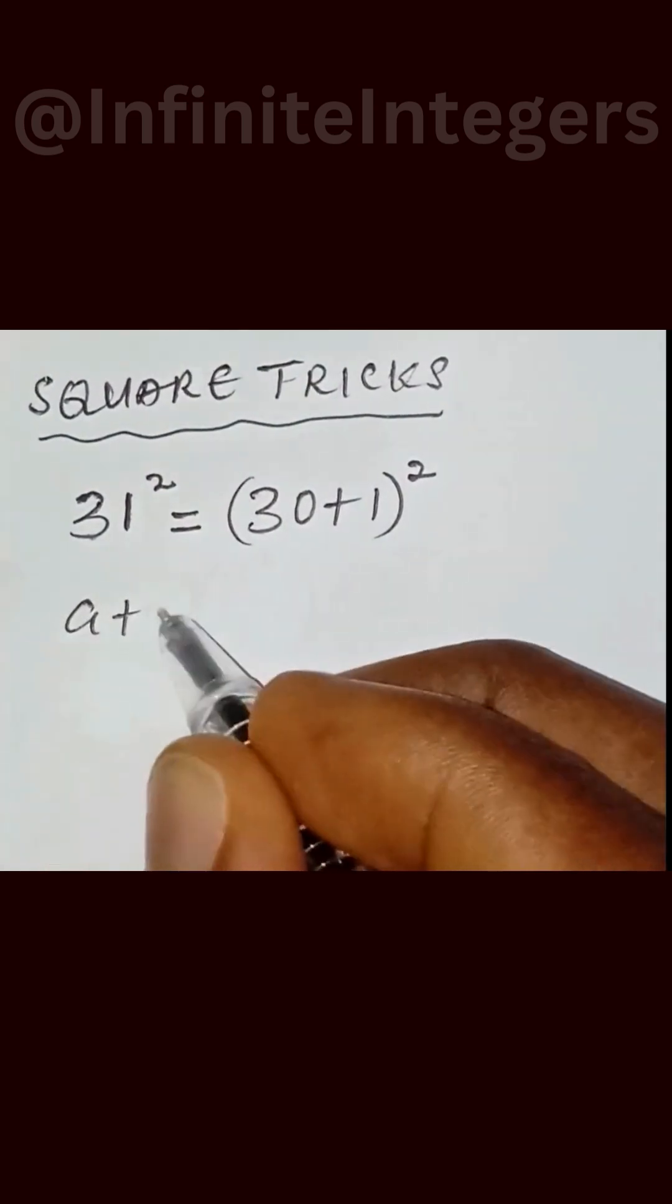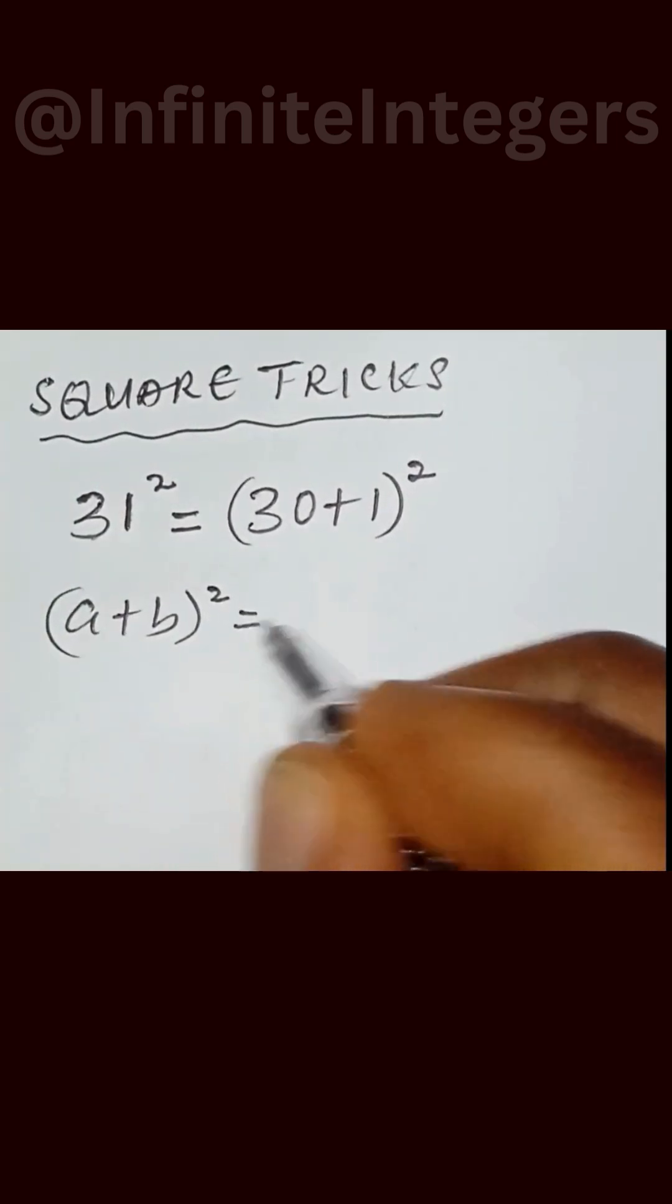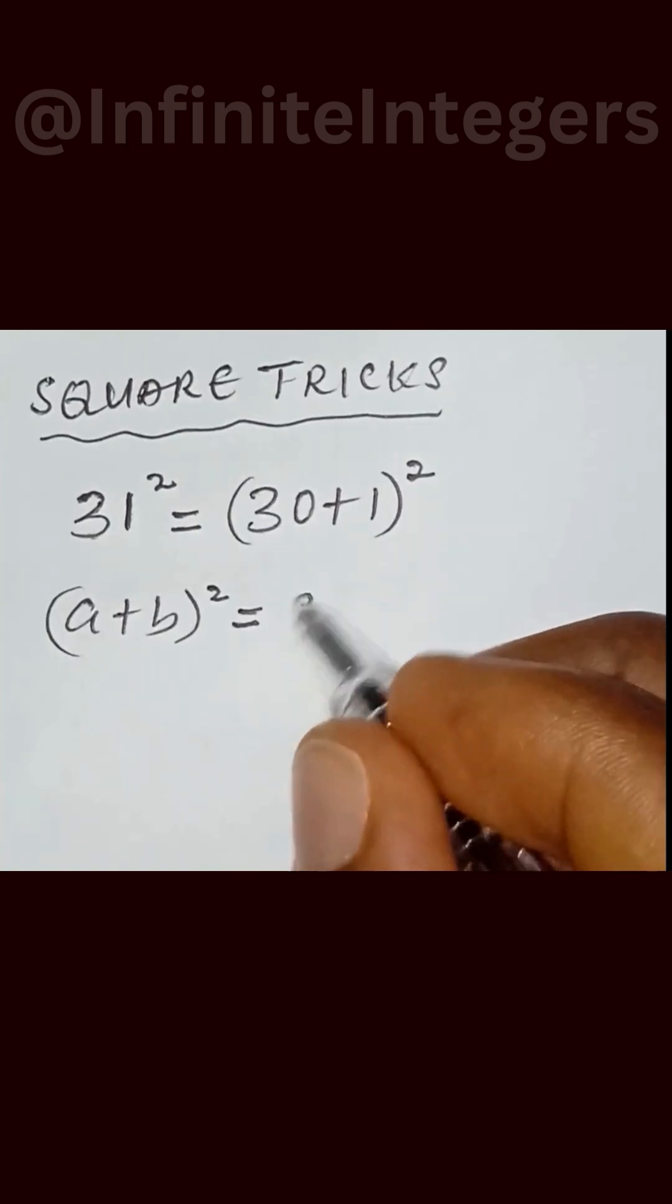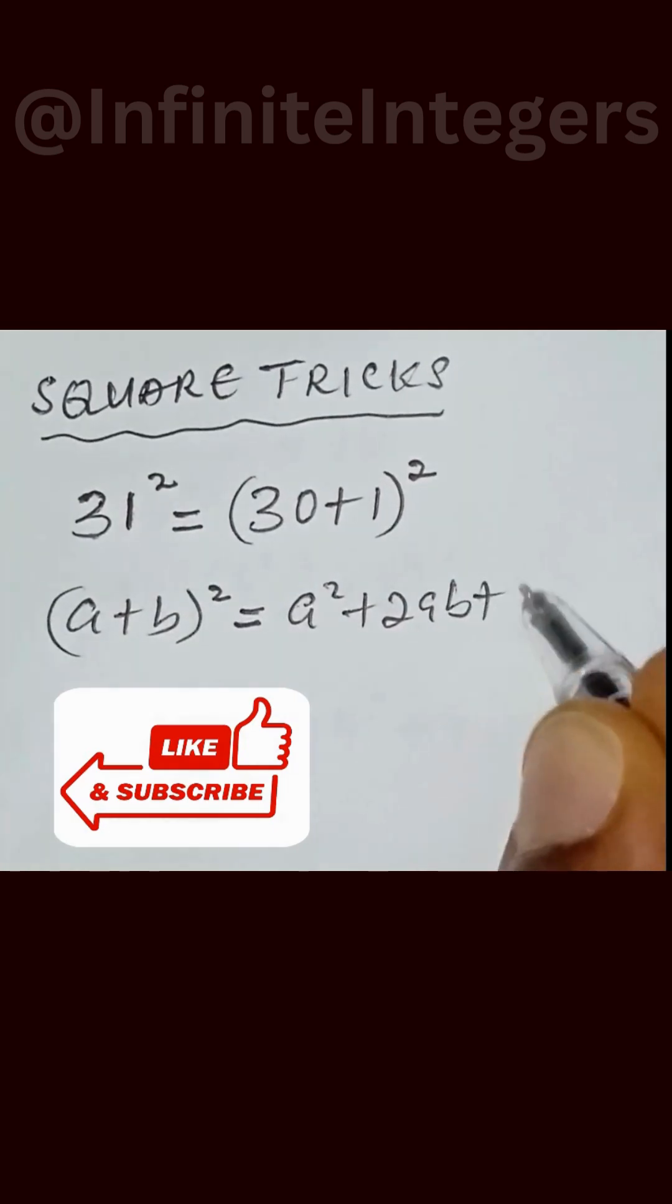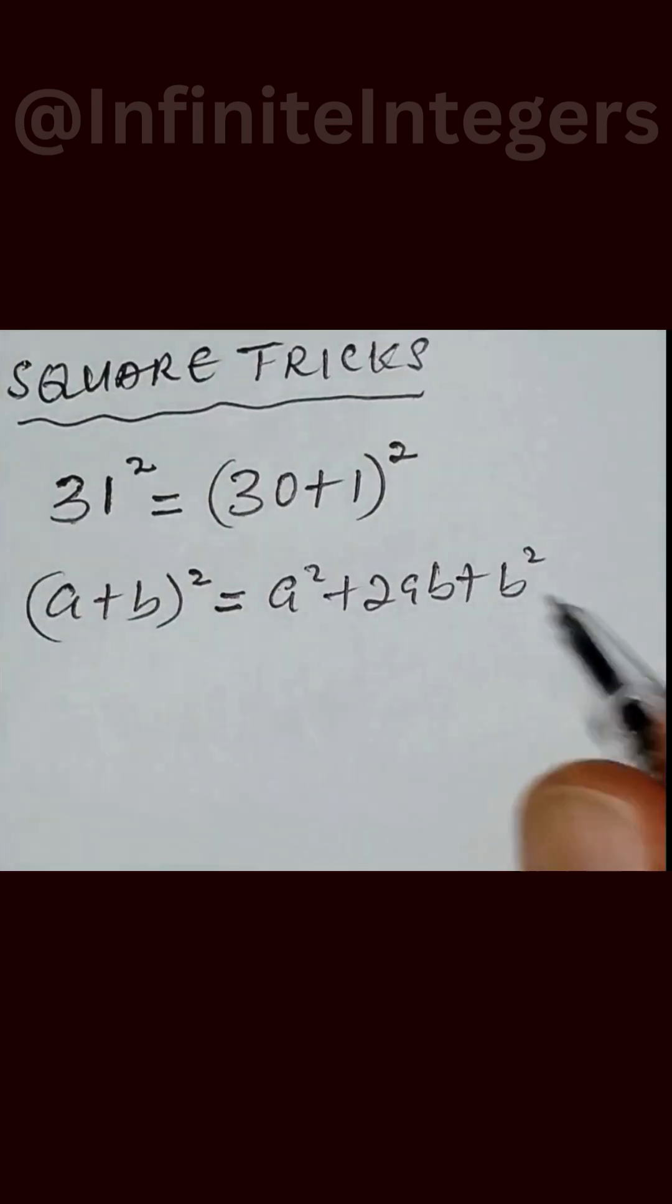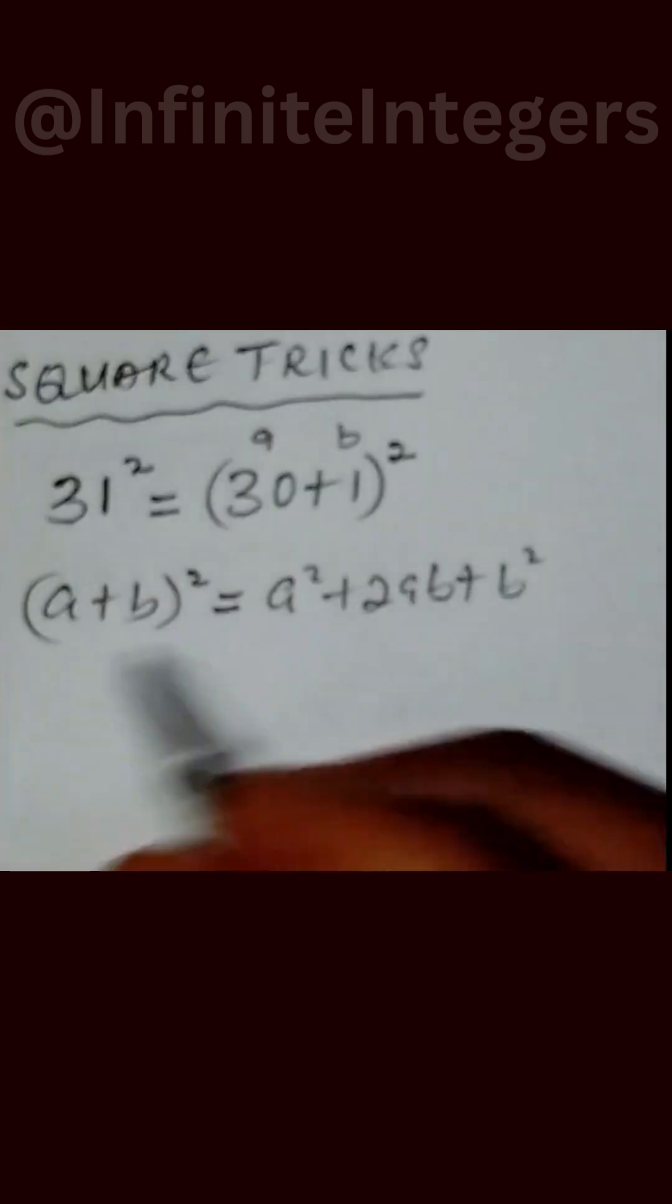identity (a+b)² raised to power 2. This identity is written as a² + 2ab + b². So if you use this identity, this will be a and this will be b.